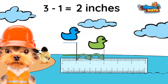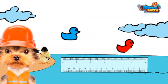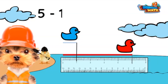Let's find the difference in lengths between the blue duck and the red duck. Looking at the ruler, I see the blue duck glided one inch and the red duck glided five inches. To find the difference we subtract five minus one. Or we can count the difference between the distances on the ruler.